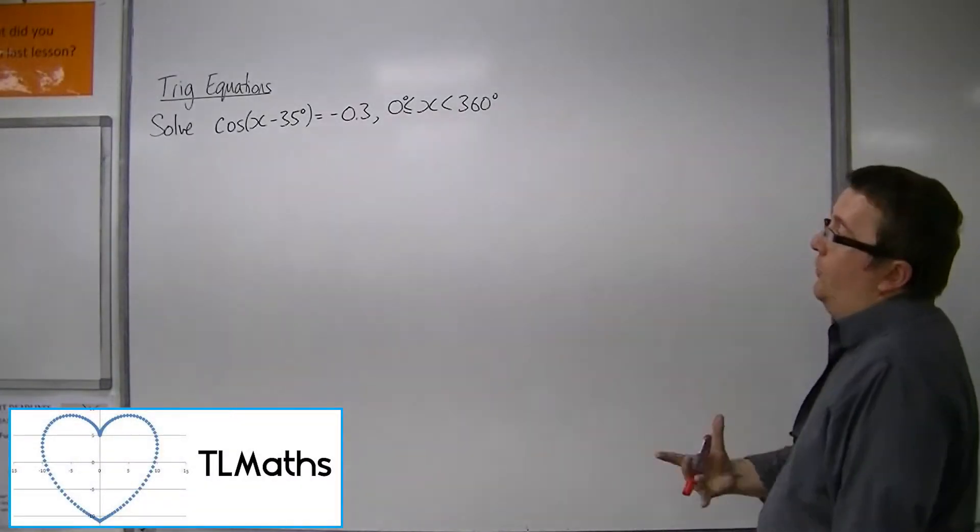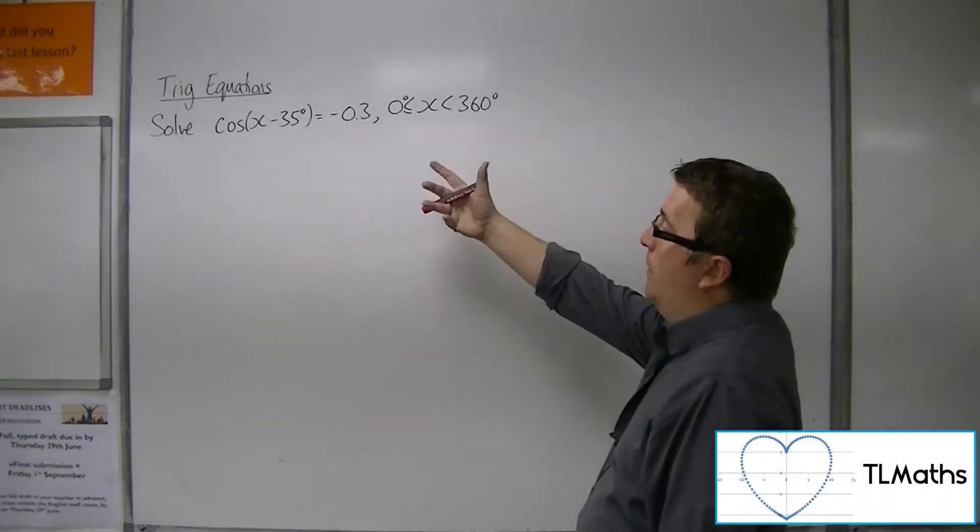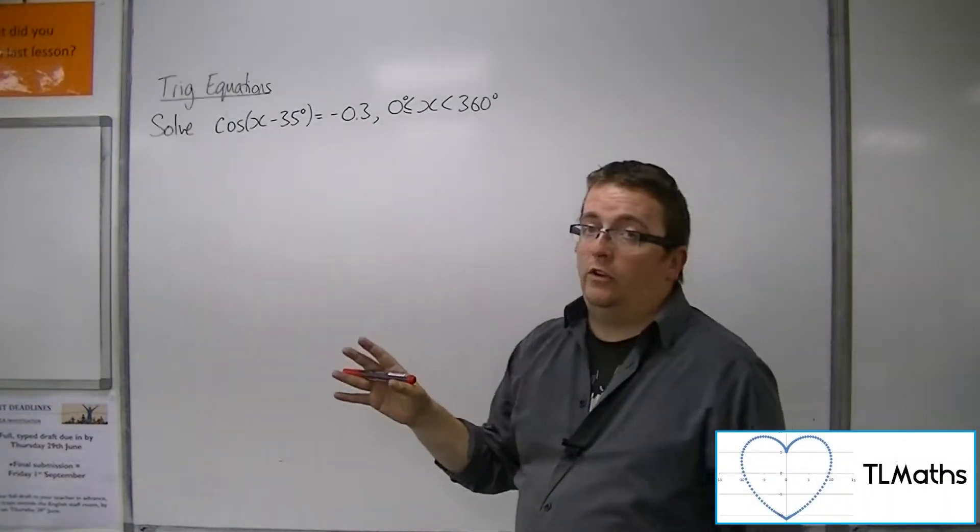So now we're going to solve cos(x - 35°) = -0.3 between 0 and 360 degrees.